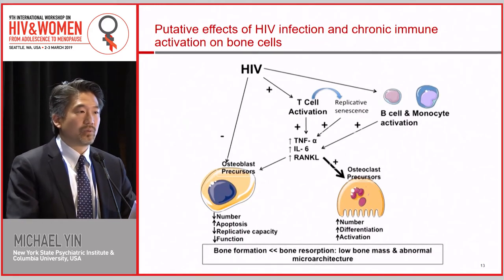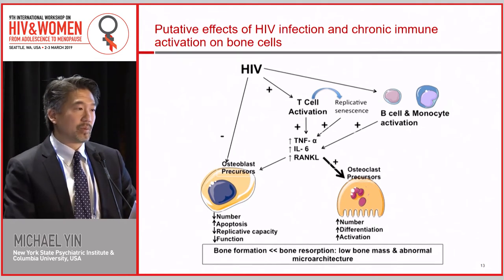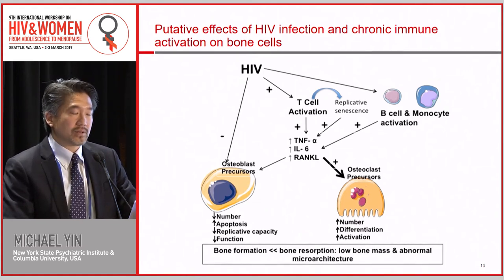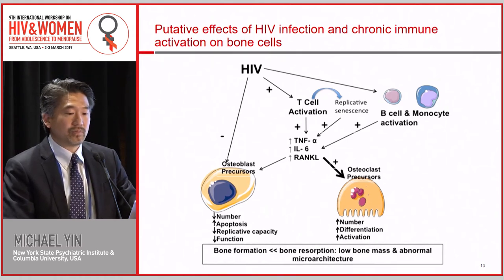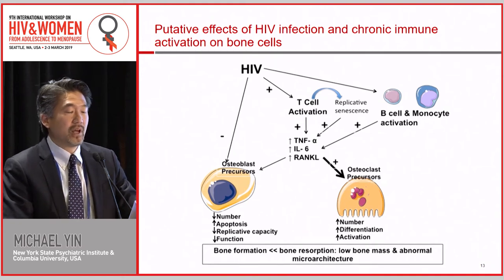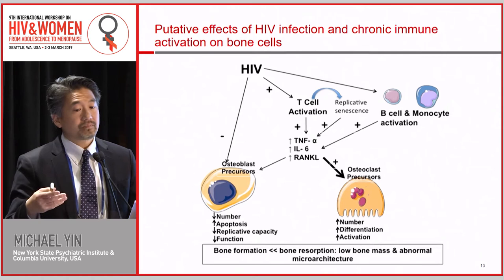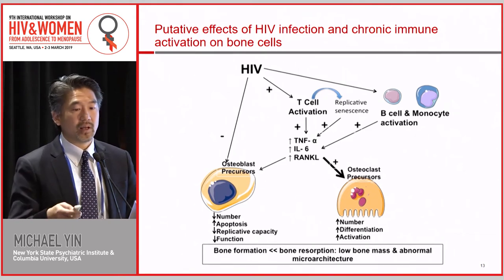HIV is associated with chronic immune activation measurable by markers of T-cell activation, monocyte activation, and higher levels of soluble inflammatory markers such as TNF, IL-6, and RANK ligand. These are very important cytokines for driving osteoclasts to differentiate and resorb bone, and they also inhibit osteoblasts from forming bone. When you have HIV infection mediated by inflammation, there is a net effect of more bone resorption than bone formation, leading to net bone loss.